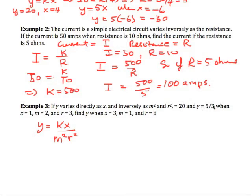Now we have that y is equal to 5 thirds when x is equal to 1, and m is 2, so that would be 2 squared, and r of course is 3. So I end up with k over 4 times 9 is what 5 thirds is, which of course is k over 36.